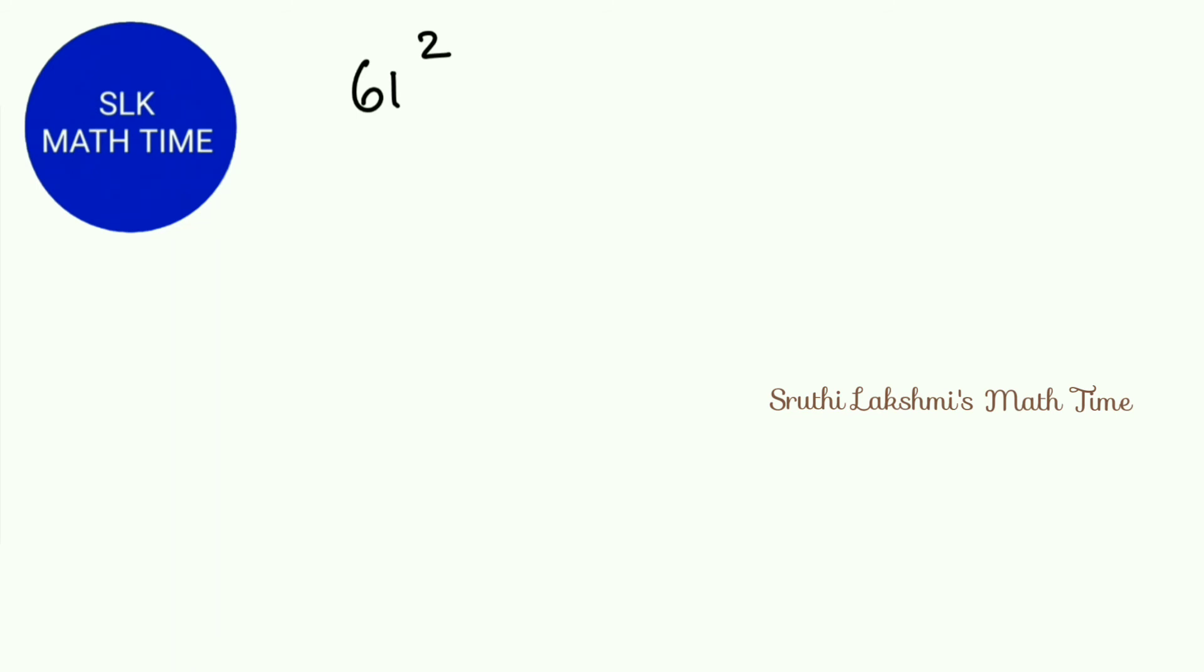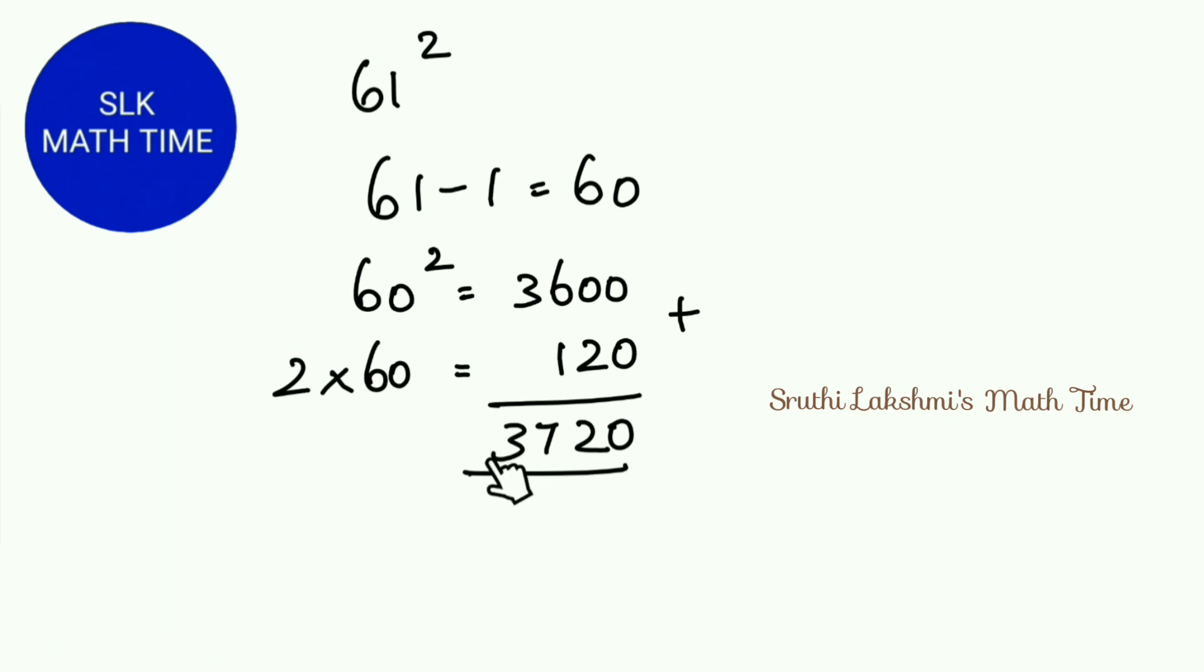This method is squaring numbers that end in 1. So let's see an example. 61 square. So 61 minus 1 is 60. So do 60 square. 60 square is 3600. Next we do 2 times 60 which is 120. Next we add 3600 plus 120 which is 3720.